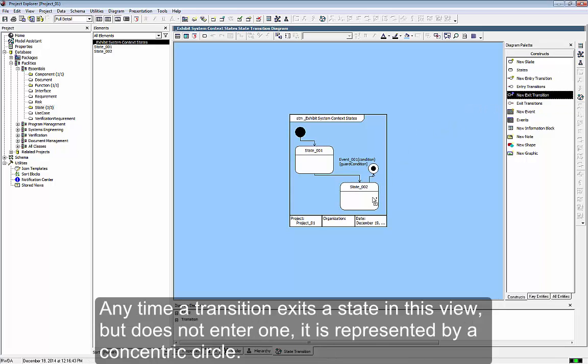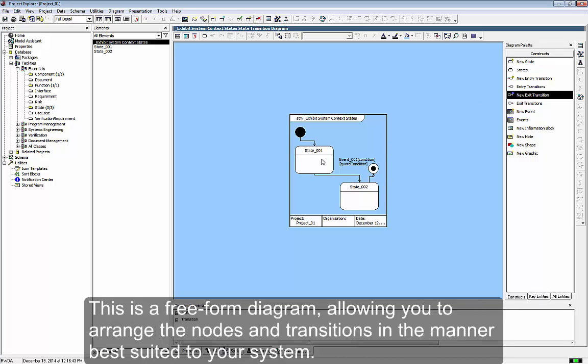Anytime a transition exits a state in this view but does not enter one, it is represented by a concentric circle. This is a free-form diagram allowing you to arrange the nodes and transitions in the manner best suited to your system.